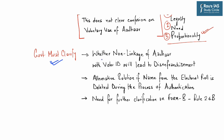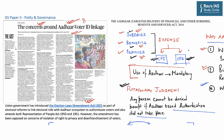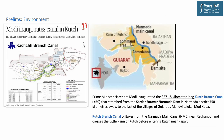As a way forward, the government must clarify whether non-linkage of Aadhaar with voter ID would lead to disenfranchisement. The government must also provide an alternative solution if citizens' names are deleted from the electoral roll during the authentication process, and provide further clarification on Form 6B under Rule 26B. This article is important from both the prelims and mains perspective under GS Paper 2 on Polity and Governance, particularly with respect to elections.